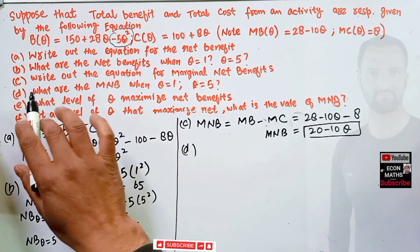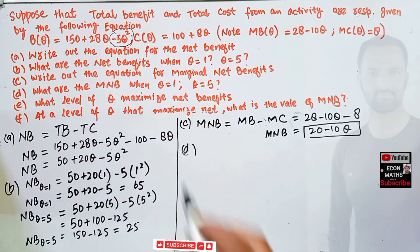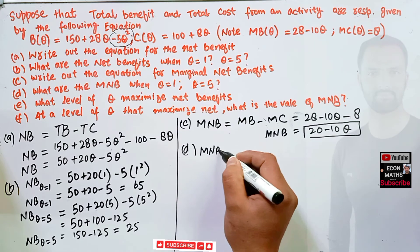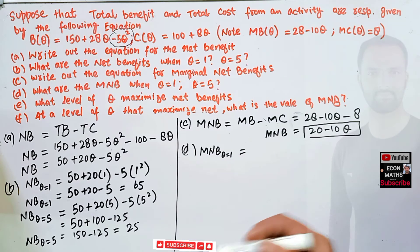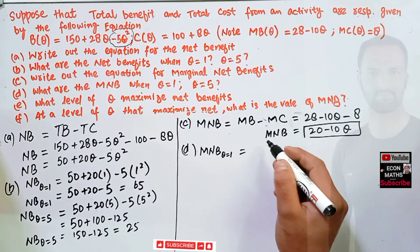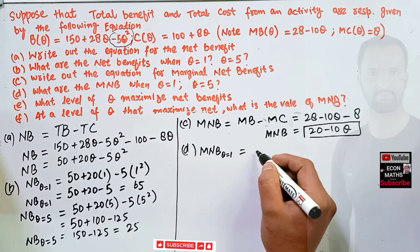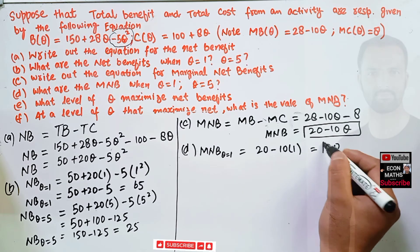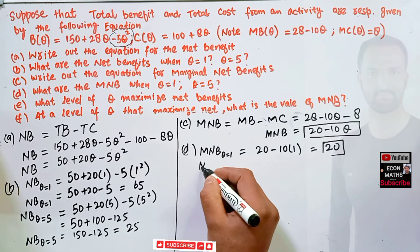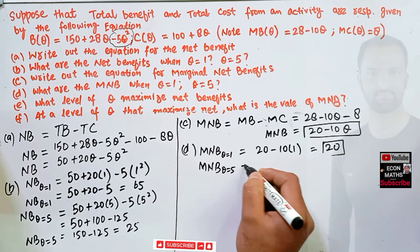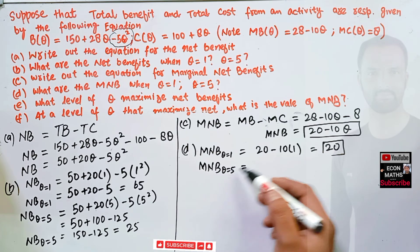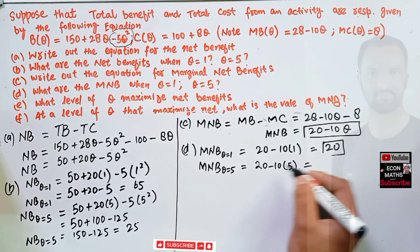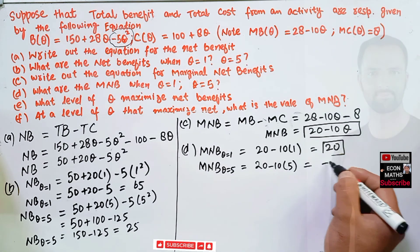Part D asks for marginal net benefits when Q = 1 and Q = 5. For Q = 1: insert into the marginal net benefit equation — 20 - 10(1) = 10. So marginal net benefit when Q = 1 is 10. For Q = 5: 20 - 10(5) = 20 - 50 = -30. So marginal net benefit is negative 30 when Q = 5.